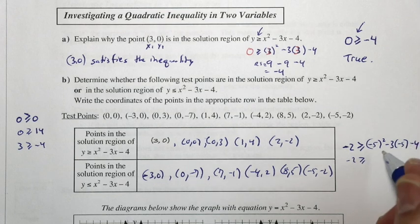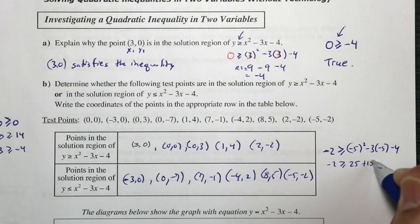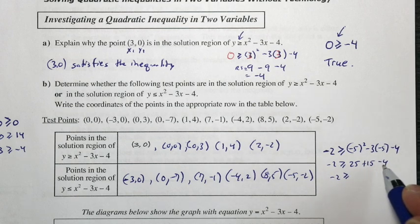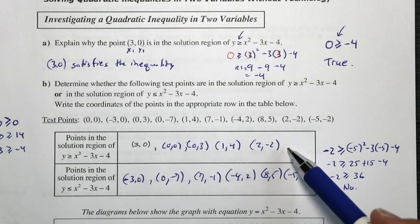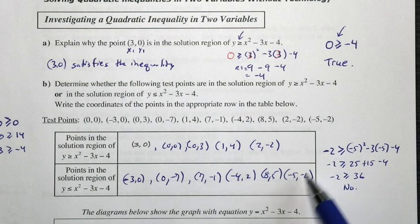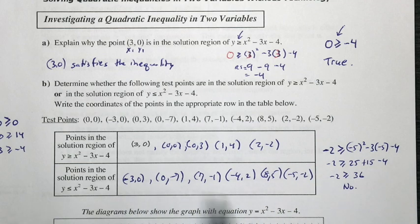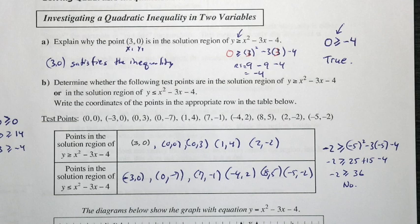So we have negative 2 greater than or equal to 25. Negative 3 times negative 5 is positive 15, minus 4. So we have negative 2 greater than or equal to 40 minus 4, which is 36. Is negative 2 greater than 36? No, it is not — this is not true. Therefore, since it doesn't satisfy this inequality, it satisfies the other one. You can always test every single one of these, but the key point is it either satisfies or it doesn't.